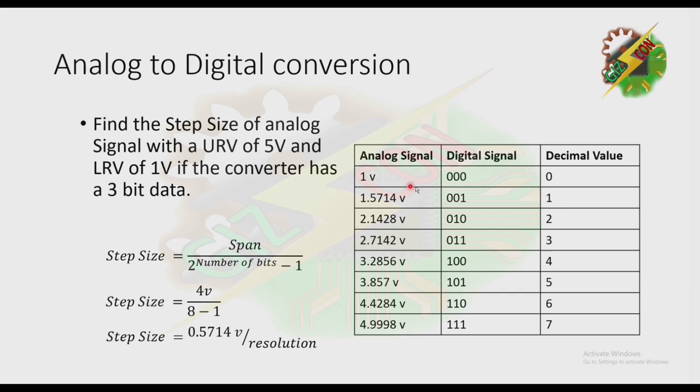As you can see, at 1 volt we have a digital signal of 0 and a decimal value of 0. Then at 1.5714 volts we have an equivalent digital signal of 001, and so on. The digital signal is what the computer understands, while the decimal value is for human interpretation.